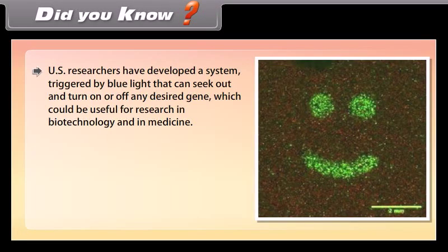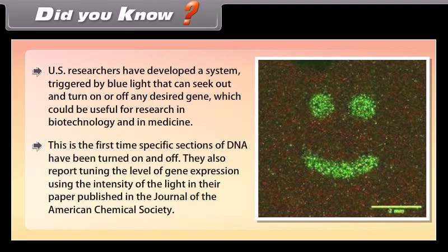Did you know? US researchers have developed a system triggered by blue light that can seek out and turn on or off any desired gene, which could be useful for research in biotechnology and medicine. This is the first time specific sections of DNA have been turned on and off. They also report tuning the level of gene expression using the intensity of the light, in a paper published in the Journal of the American Chemical Society.